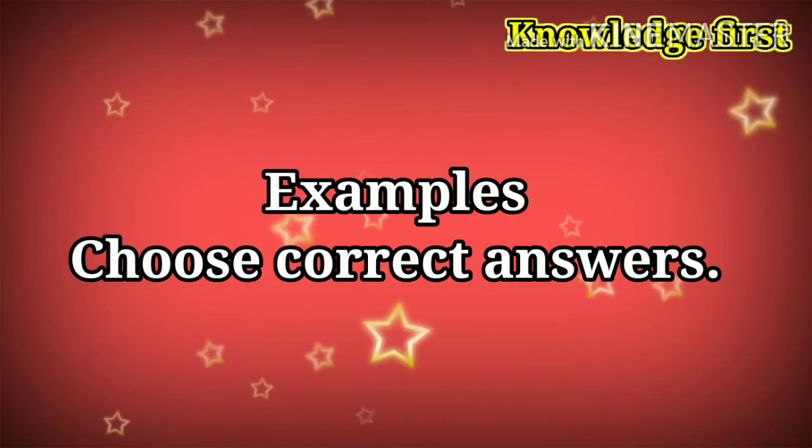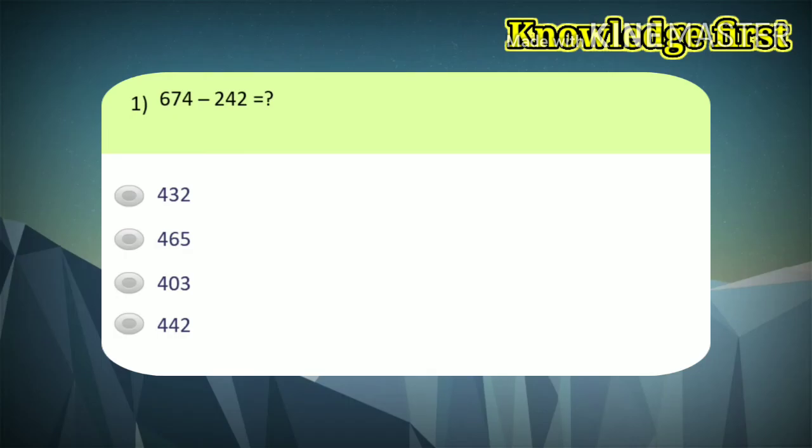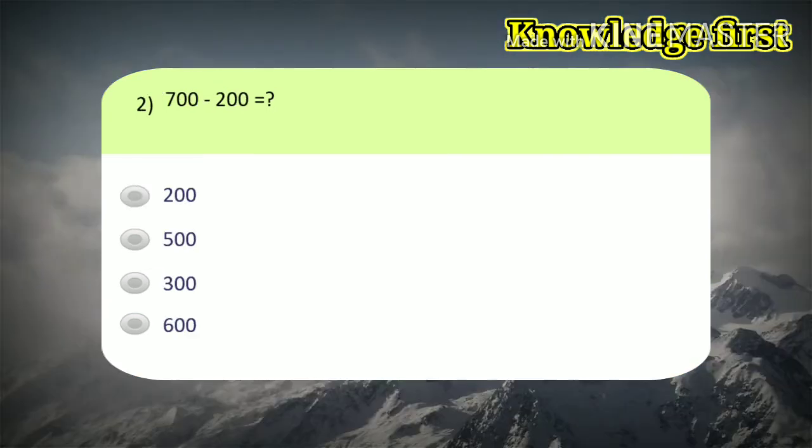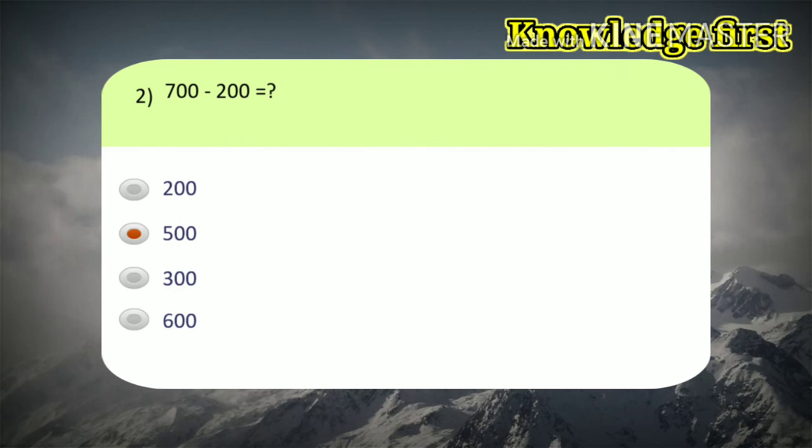Friends, we are going to see some examples of subtraction. So you choose correct answers. First example, 674 minus 242. Correct answer is 432. Second example, 700 minus 200. Correct answer is 500.